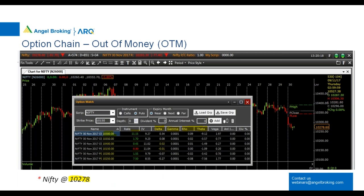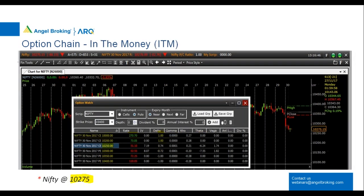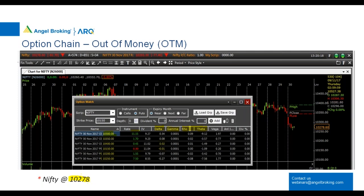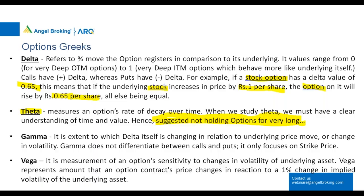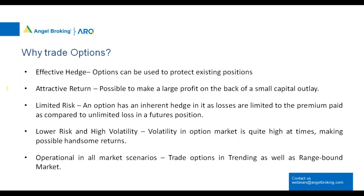Having some idea of technical analysis and major events can work in your favor when trading options. Other Greeks like gamma and vega will be covered in greater detail with examples in a dedicated webinar specifically on option Greeks. The theta for the Nifty 10,300 call option was −9 points decay per day, and for the 10,350 it was −3.57 points. Theta is a reflection of the decay rate of the option over time.